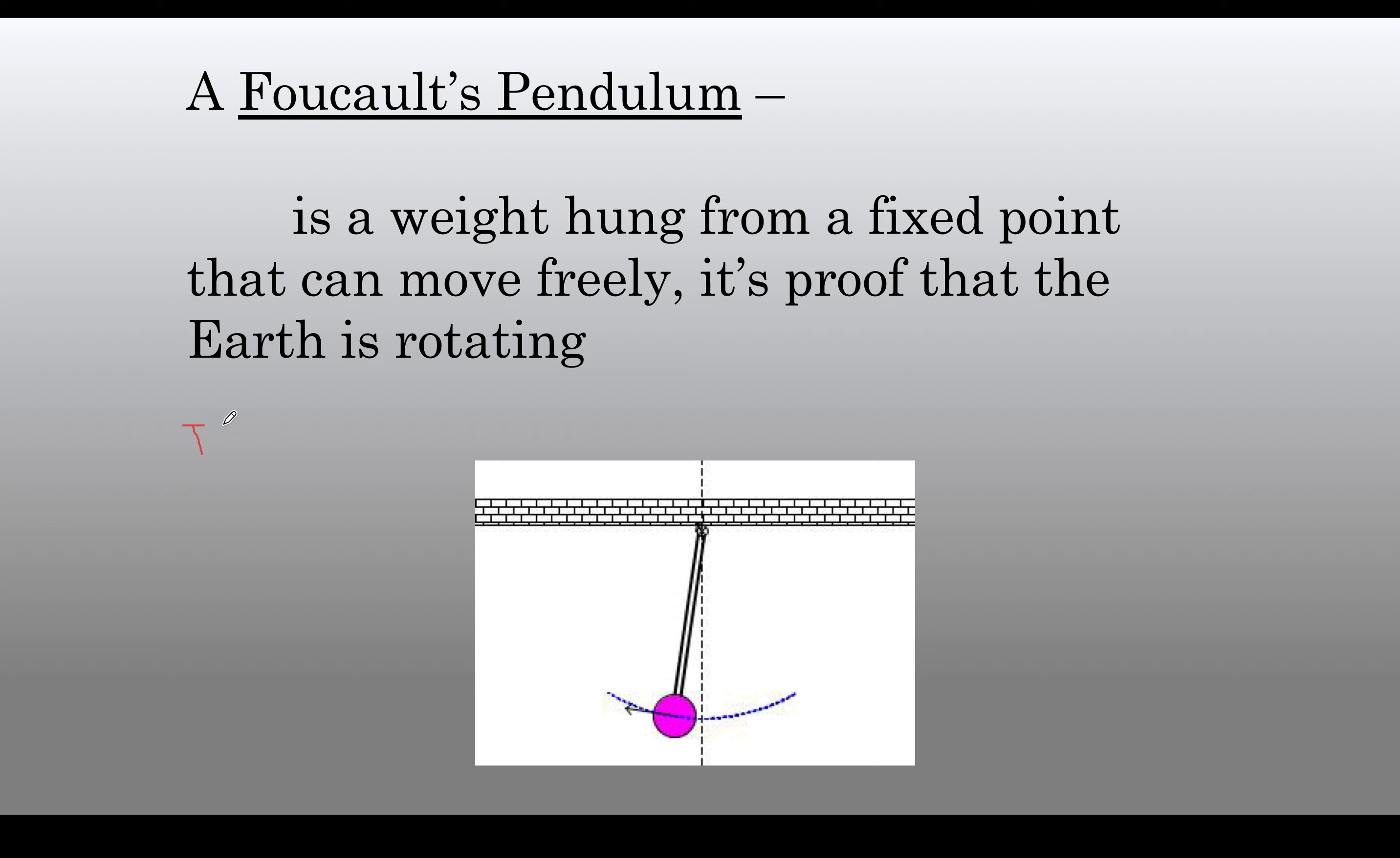For example, if this is a top view, here's where that pendulum is fixed to the ceiling and it would swing back and forth. So let's just imagine you started it and it was just going north to south. This pendulum is just swinging back and forth. Again, you're looking right down at it.